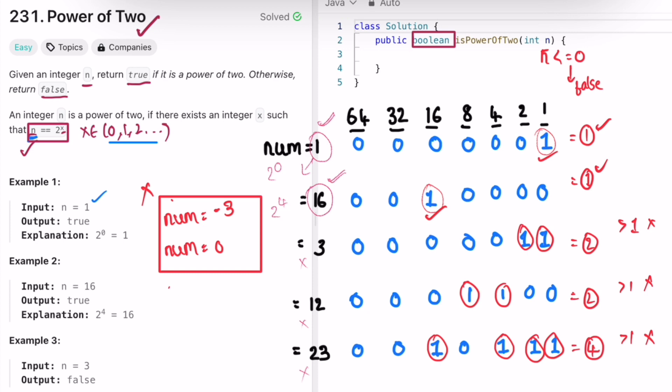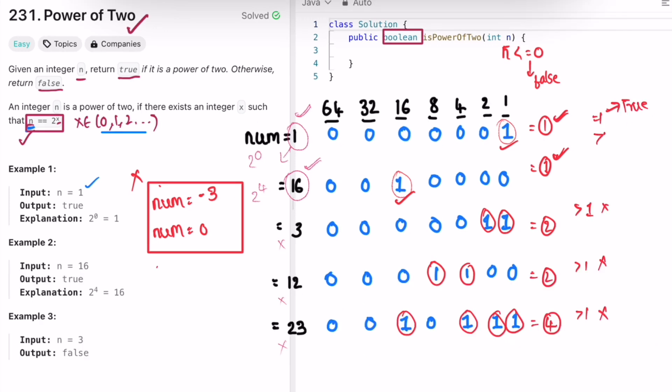In the next line onwards we count the number of one bits set. If it is equal to one then we return true, if it is greater than one then we return false. Now let's take a look at the code.